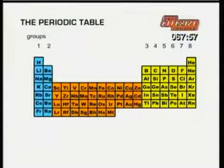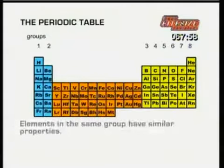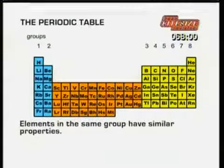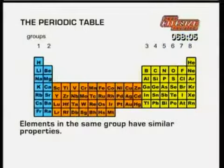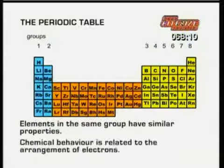Because they have the same number of electrons in their outer shell, elements in the same group have similar properties. The periodic table helps us understand and predict all kinds of patterns of chemical behaviour, because chemical behaviour is related to the arrangement of electrons.